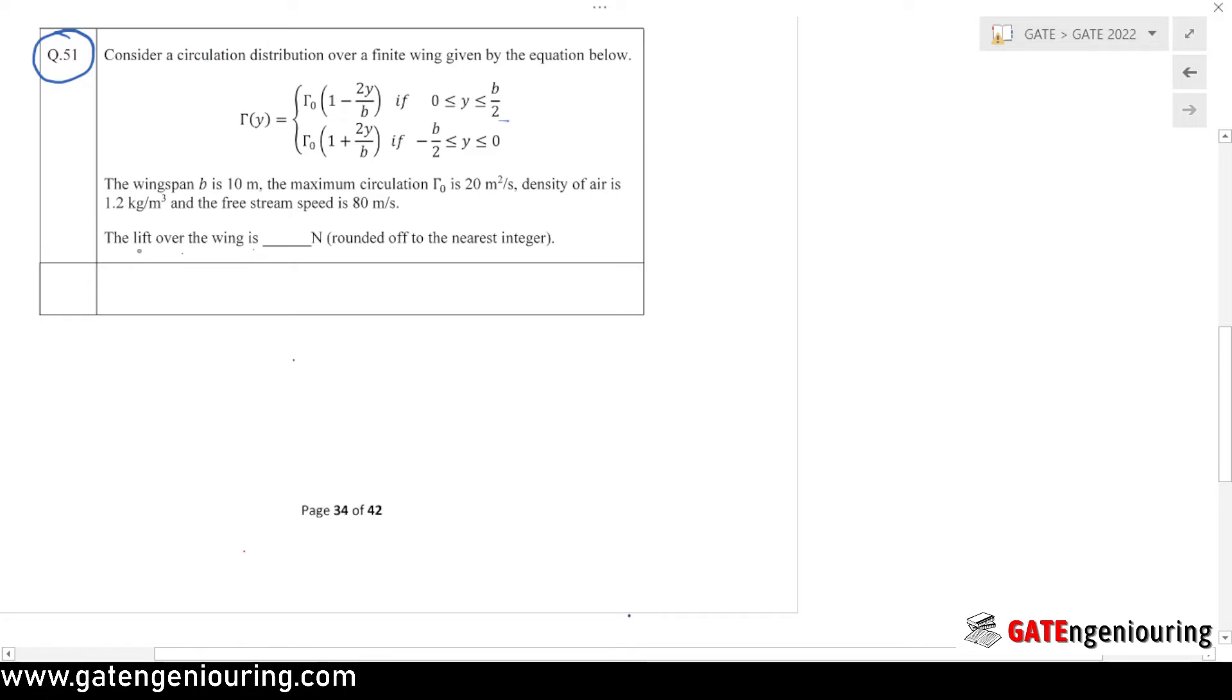The problem which we have to find out is the lift over the wing. The circulation distribution over a finite wing is given, and limits are given. These limits are for the right wing.